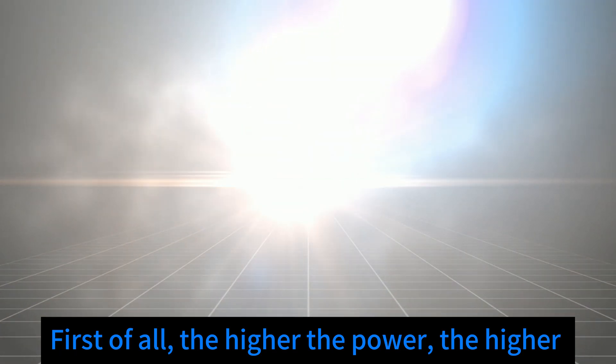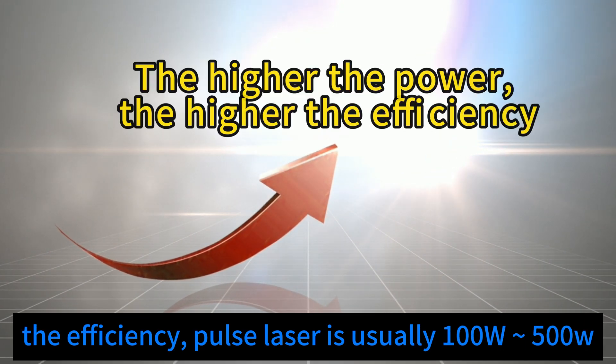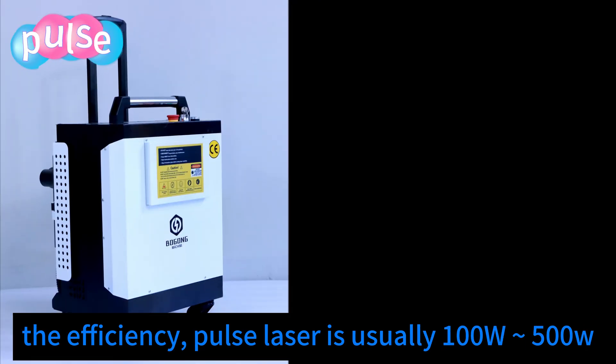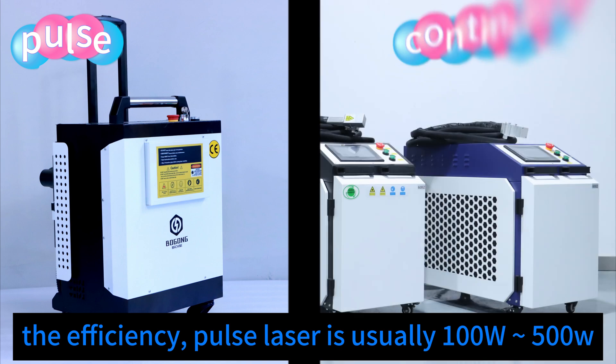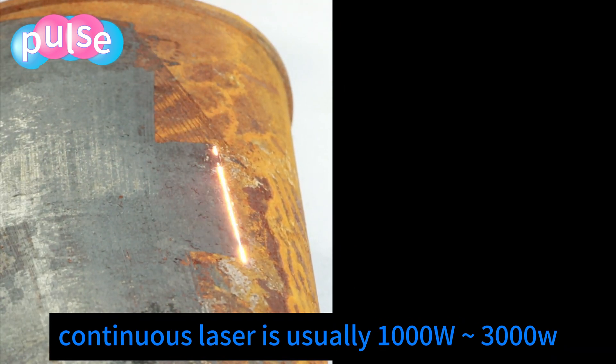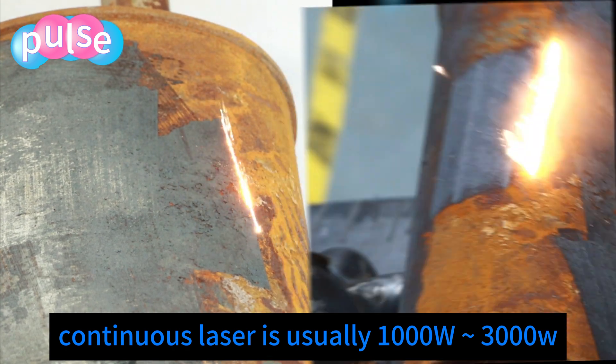First of all, the higher the power, the higher the efficiency. Pulse laser is usually 100 watts to 500 watts. Continuous laser is usually 1000 watts, 3000 watts.